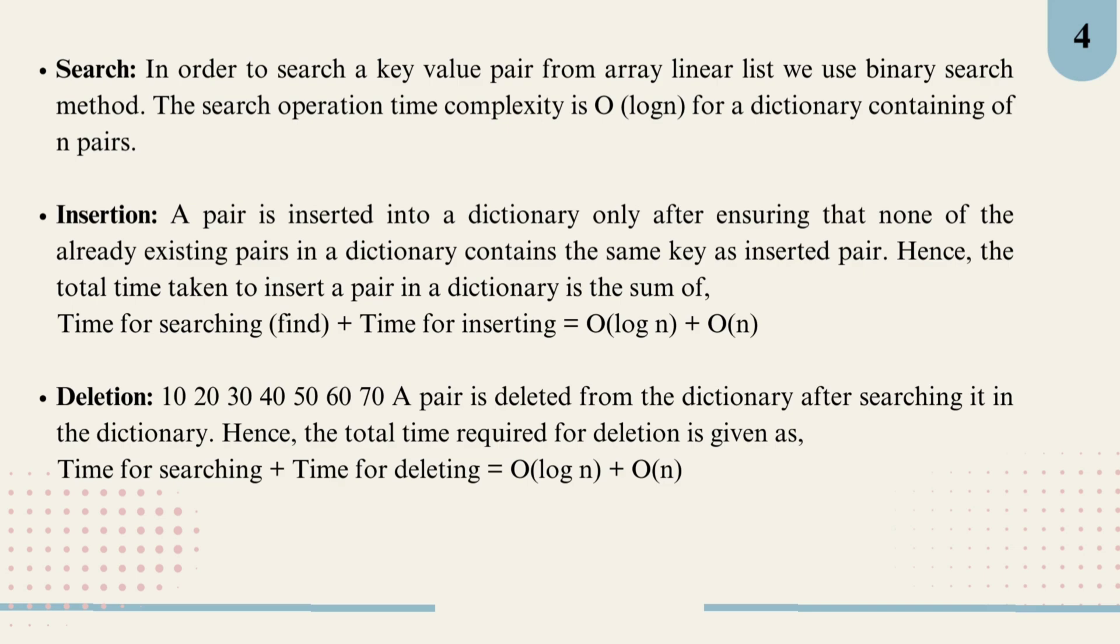Finally deletion: for deletion we first locate a key-value pair using binary search. Once we find it, it's removed and elements are shifted to maintain order. The total time required is time for searching plus time for deletion, which also comes out to O(log n + n). So while sorted arrays make searching fast, insertion and deletion can be more time consuming due to shifting elements.